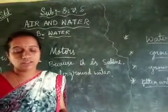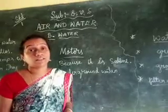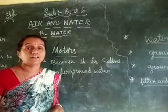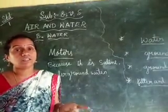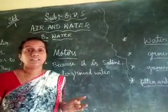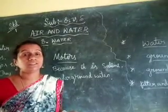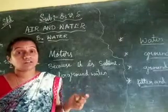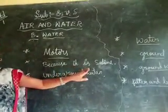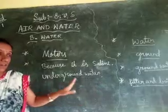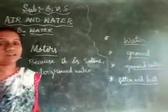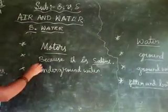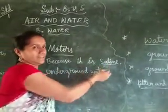Why is seawater not useful for agriculture? Because seawater is saline water — it contains salt. So the second answer is: because it is saline. Saline means the water which contains salt.